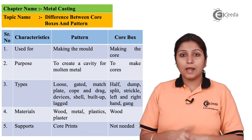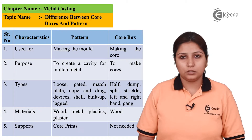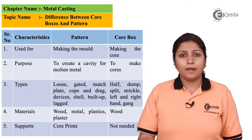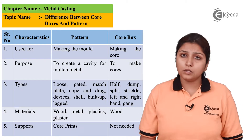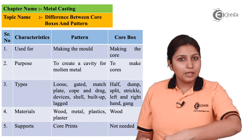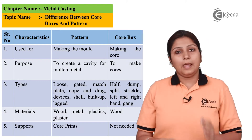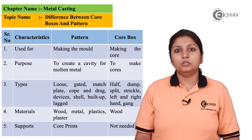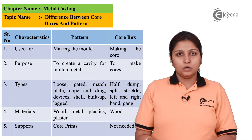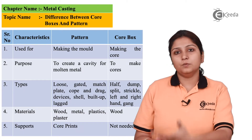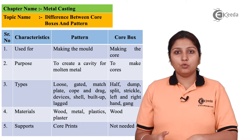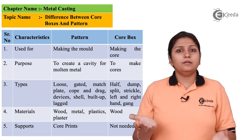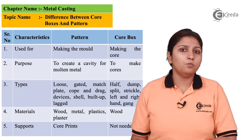There are many types of core boxes, such as split core box, gang core box, right or left core box, and trickle core box. Each has a different function. The split core box uses two separate core boxes to produce a single core. Gang core boxes are used for making small cores of different sizes. Right and left core boxes also have specific functions.